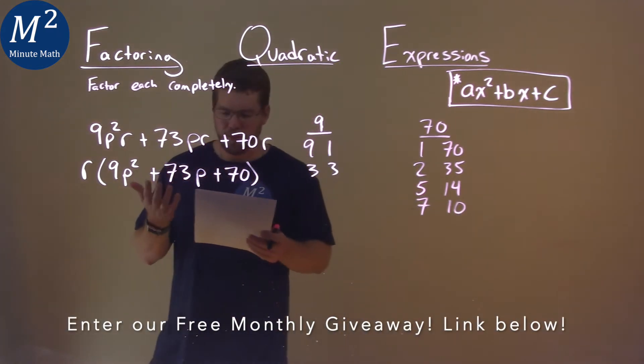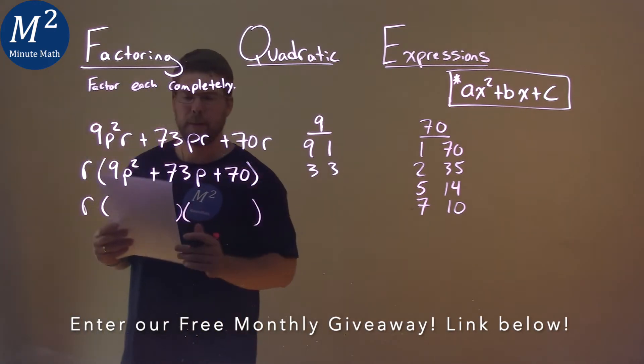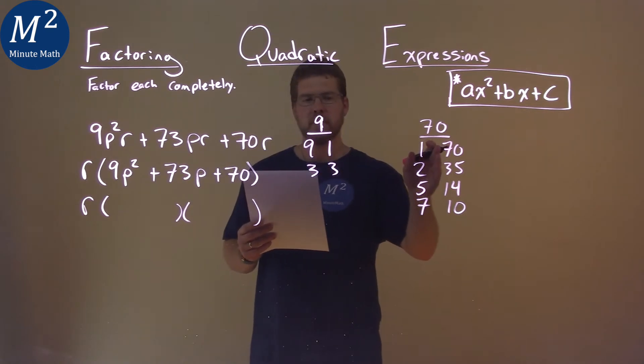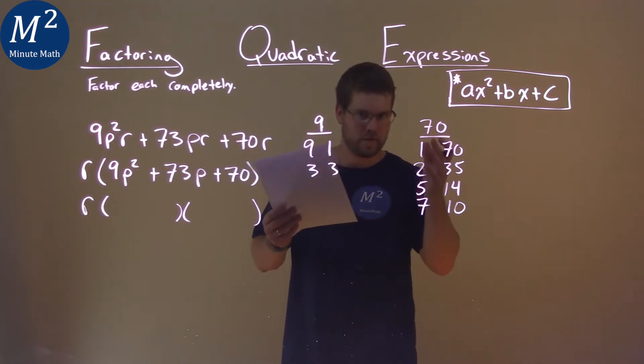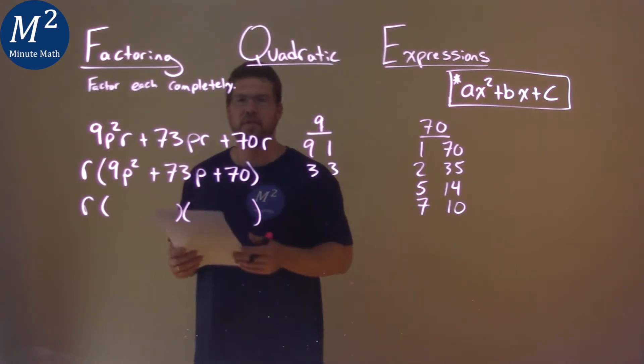Now I want to set this up in factored form. One of the a values times one of the c values, plus the other a value times the other c value, should add to 73.